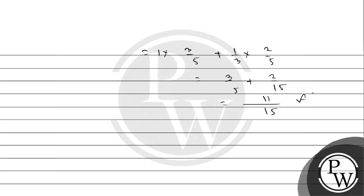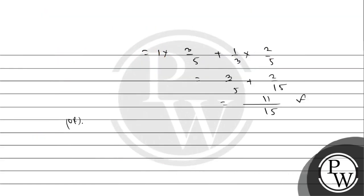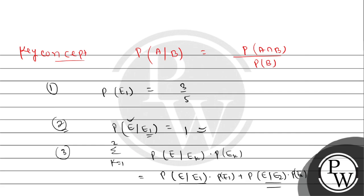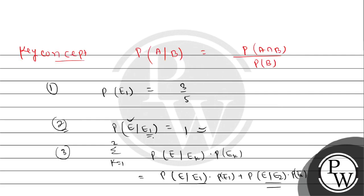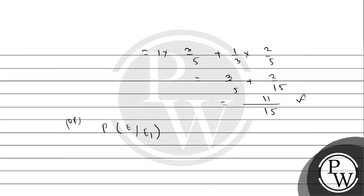Converting 3/5 to 9/15, we get 9/15 + 2/15 = 11/15. So the answer for Part 3 is 11/15. For Part 4, we need to find the probability that the student knows the answer given that he answered it correctly - that is P(E1|E). We apply Bayes' theorem for this.